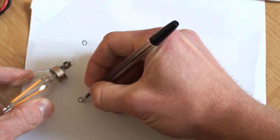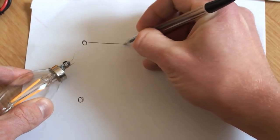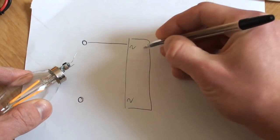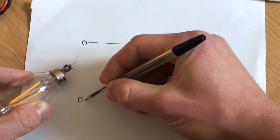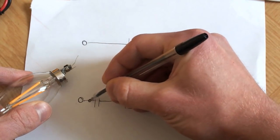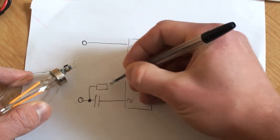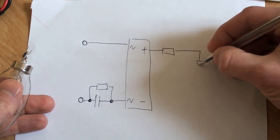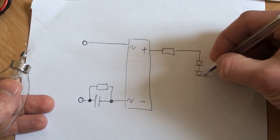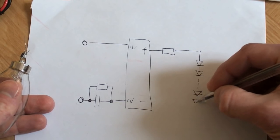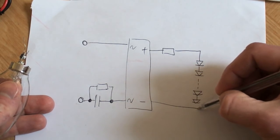The mains comes in. One side goes directly into a bridge rectifier. The other one goes through a capacitor and one mega ohm resistor. The positive goes through a one kilo ohm resistor and through the filaments, which basically is a lot of LEDs in series. And that's it.